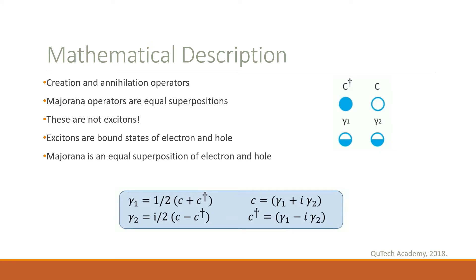We can think of Majorana fermions in terms of ordinary creation and annihilation operators. The creation operator is represented here by a filled state, or an electron, and the annihilation operator is represented by an empty state, or the hole. The Majorana states are equal superpositions of these creation and annihilation operators, and are represented by these half-filled states. For Majorana fermions, these states are equal to their own conjugate, as we see by this equation here.